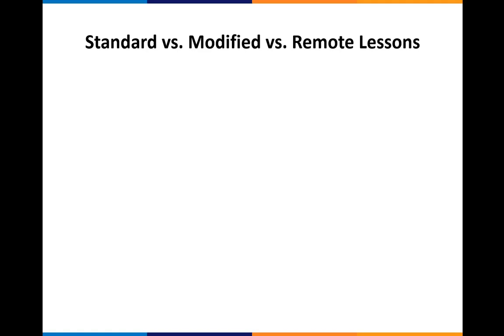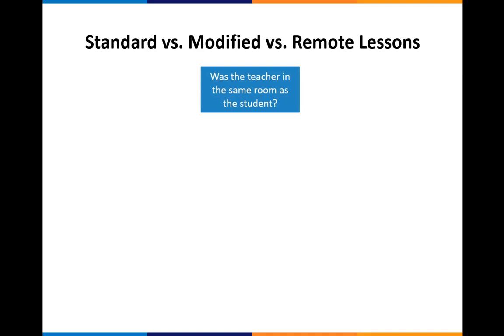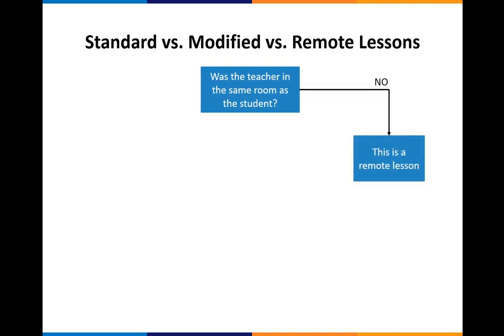We've put together a little decision tree. The first question you can ask yourself is: was the teacher in the same room as the student? If the answer is no, then this is a remote lesson.